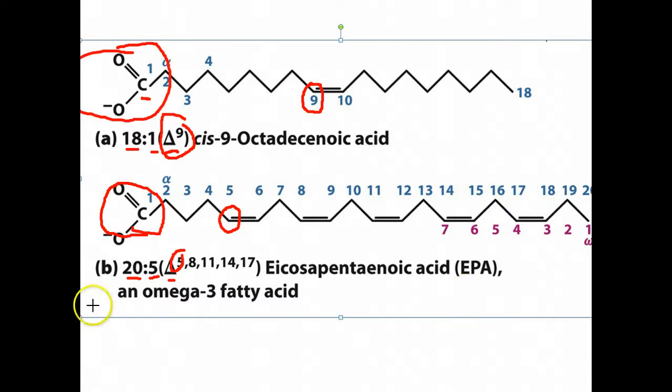The other method of counting is from the omega end, which is the opposite end as the carboxyl end. In this case, this is an omega-3 fatty acid, because if we count 1, 2, 3 carbons from the omega end, that's where that first double bond is. So that's how this can be called an omega-3 fatty acid. Basically, just two different types of nomenclature, depending if we start counting from the carboxyl end or the omega end.